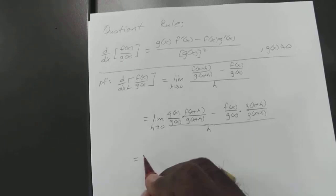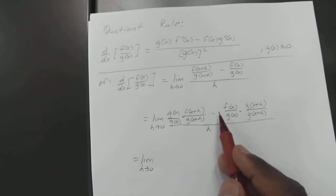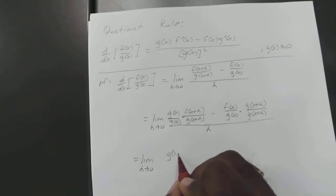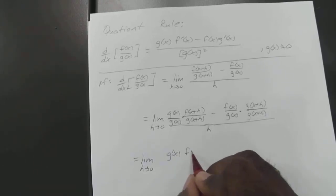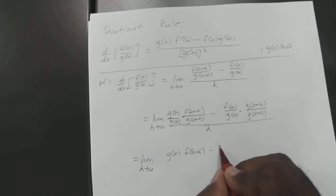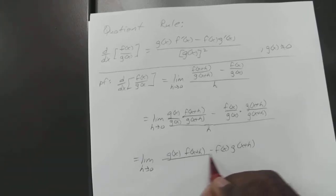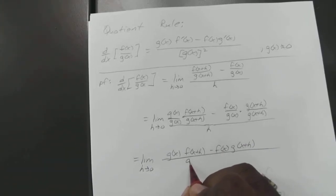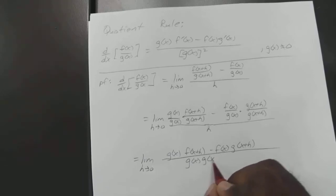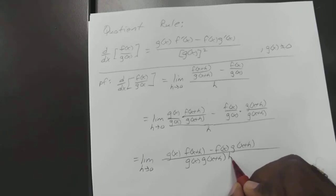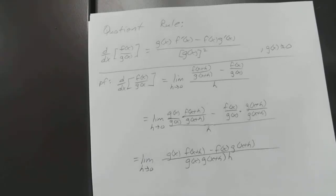So that means — moving that over — the limit as h approaches zero. Since we have the same denominator, we can make that one nice neat fraction. So you have g of x times f of x plus h, minus f of x times g of x plus h, all over g of x times g of x plus h. And instead of putting all of that over h, we can just bring our h in there.